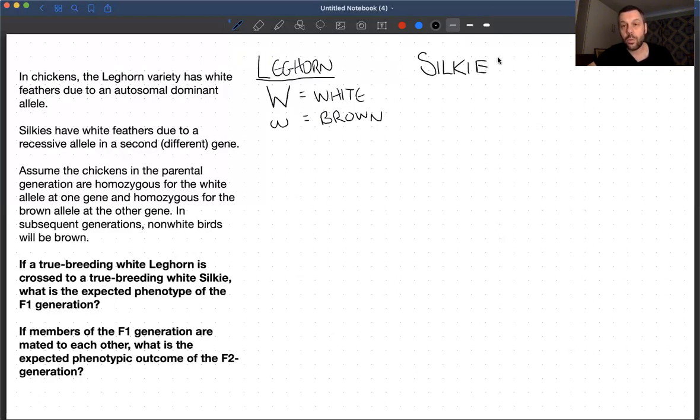Now the other one, Silkies. So Silkies have white feathers because of a recessive allele in a second different gene. So they are white because they have a recessive version of a gene. We'll call this gene B. So recessive versions of this gene would be white. We are told that in the question. And that means that dominant versions of this gene must be brown because we're told non-white birds are brown.